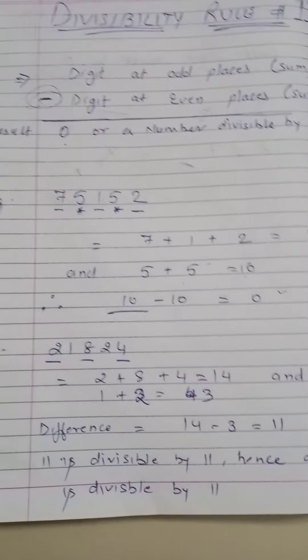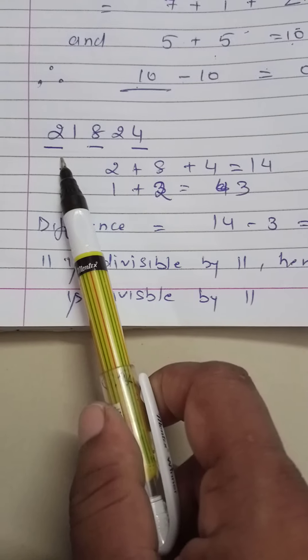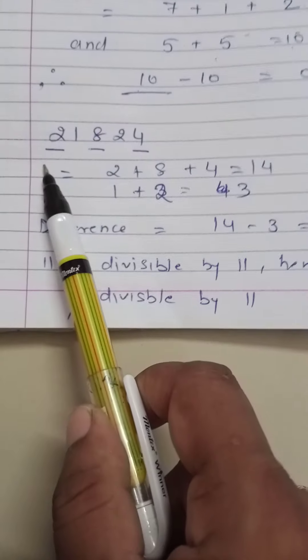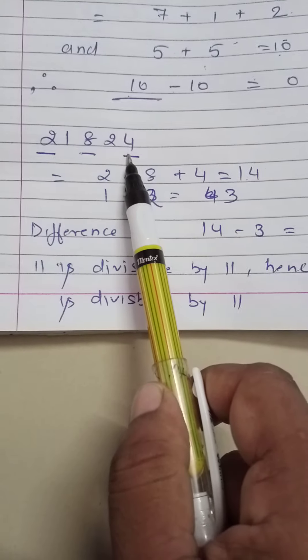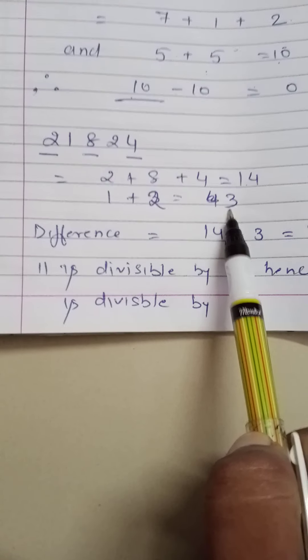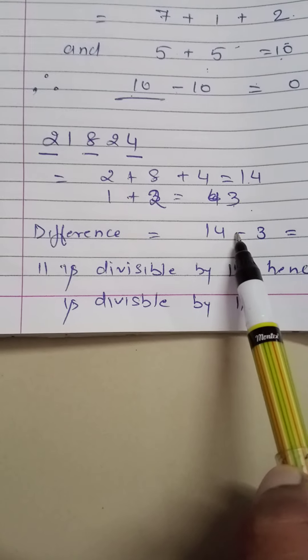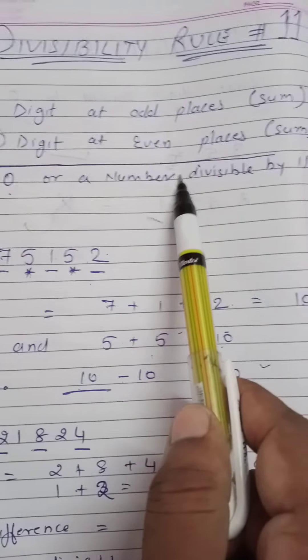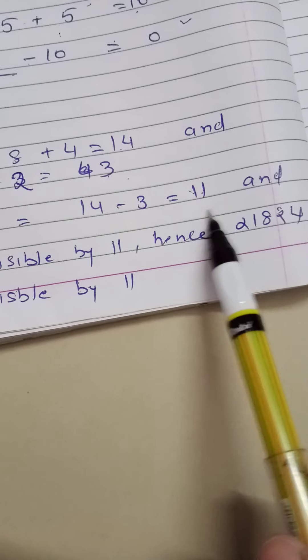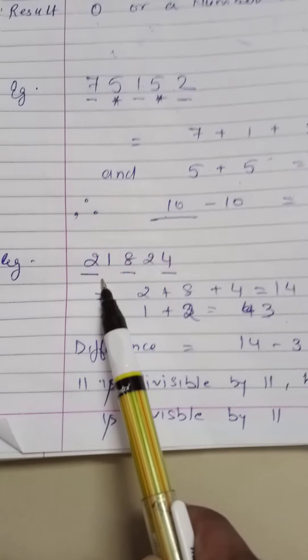Another example: 21824. The odd-place digits are 2, 8, and 4, so their sum is 2 plus 8 plus 4 equals 14. The even-place digits are 1 and 2, so 1 plus 2 equals 3. The difference is 14 minus 3 equals 11. Since 11 is divisible by 11, we can clearly say that 21824 is divisible by 11.